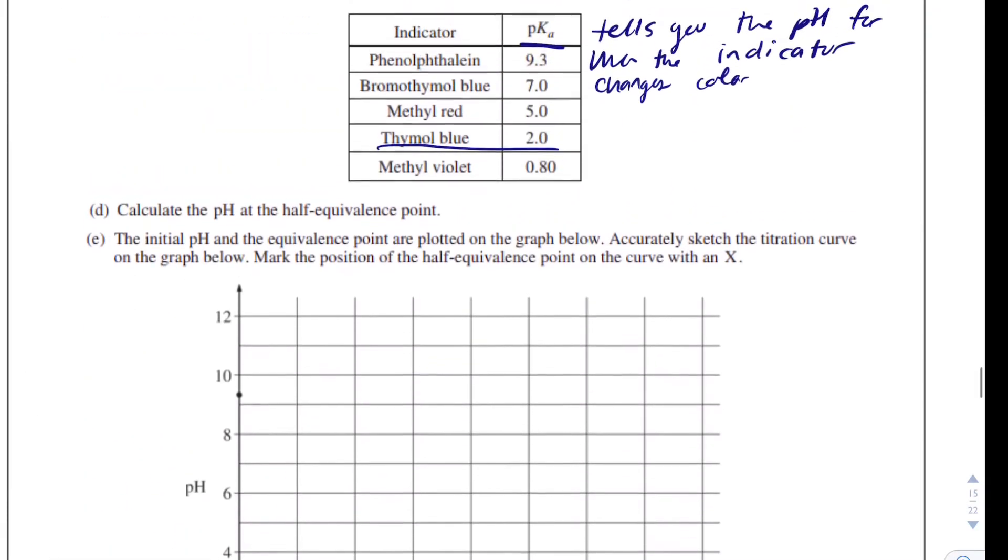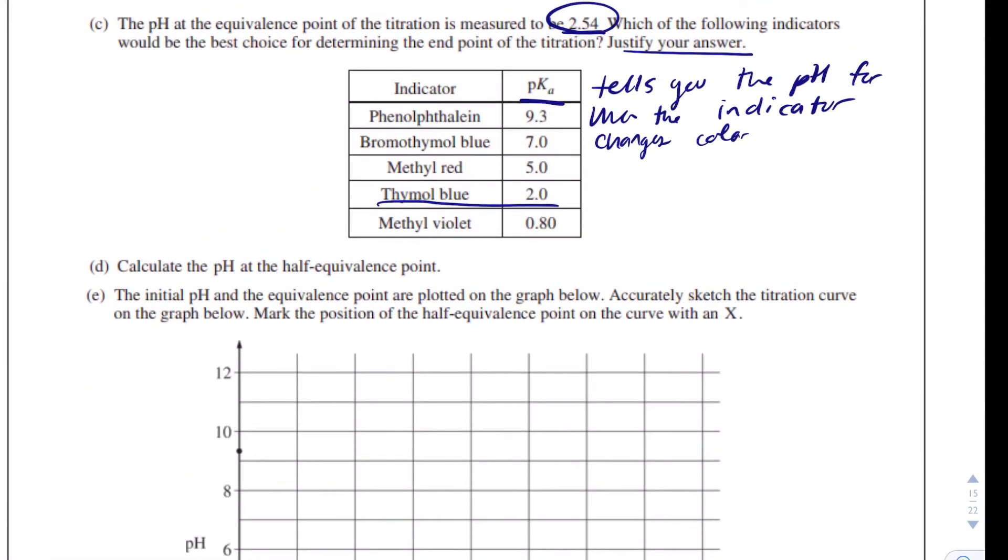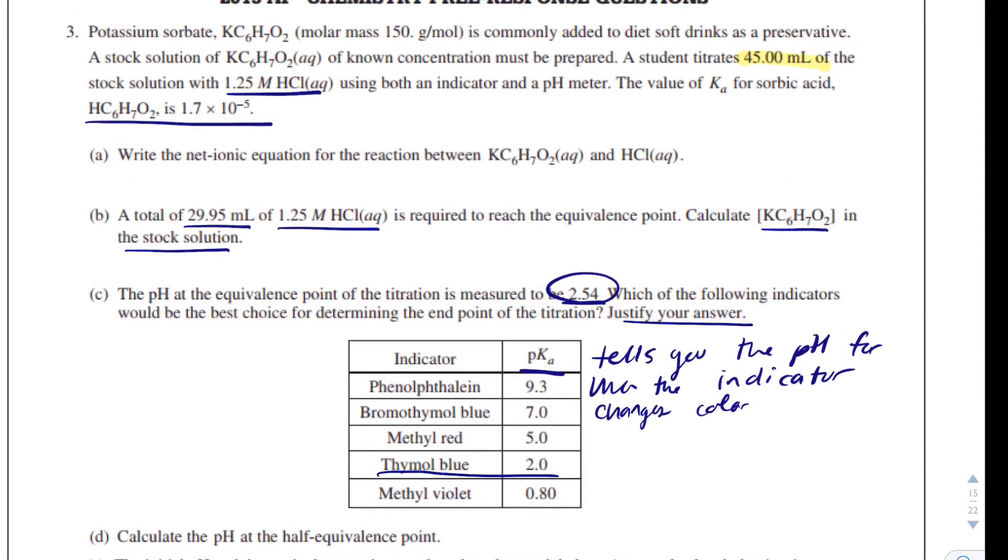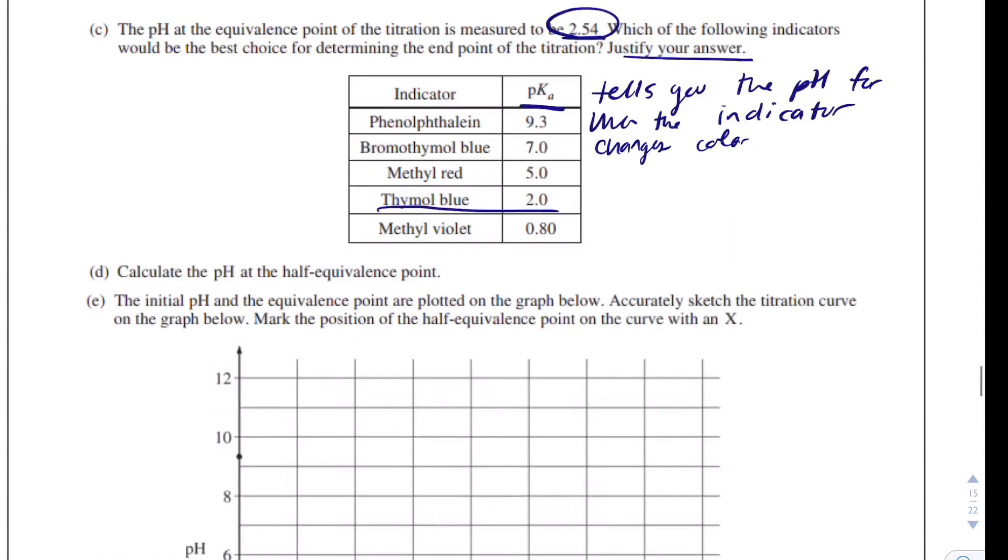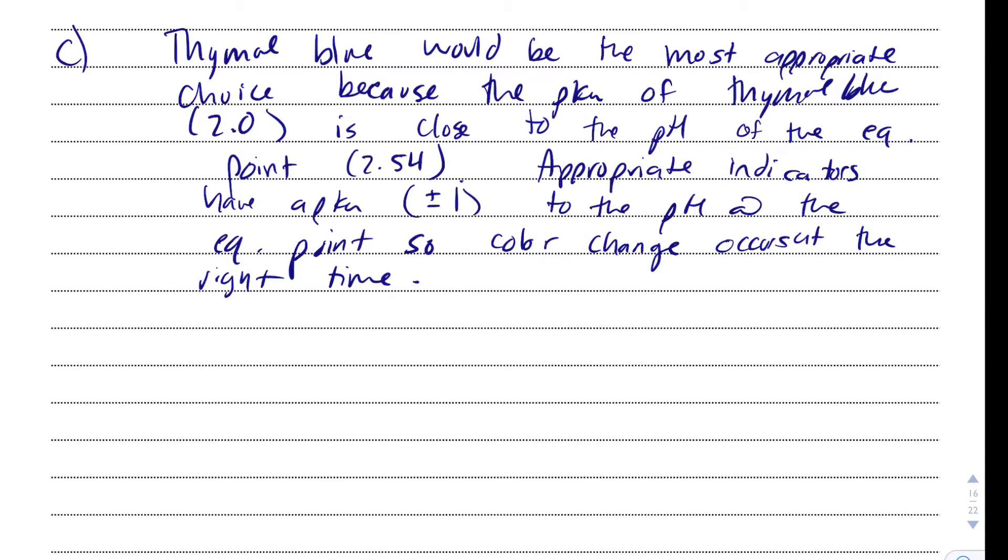So now question D says, calculate the pH at the half equivalence point. What did they give me? They gave me Ka, so I was looking for that because I didn't want to have to do complicated math, and this math is a lot easier. So I would just say that the pH at the half equivalence point is equal to pKa of the acid. And there's a lot of reasons why. That's because your acid and conjugate base have equal concentrations.